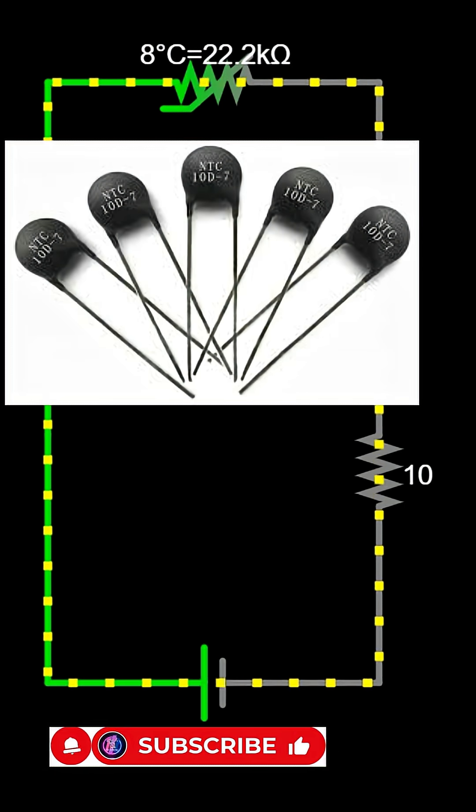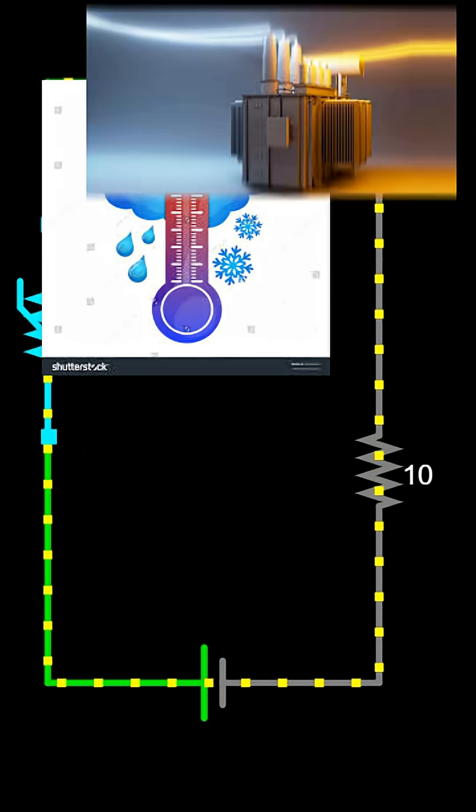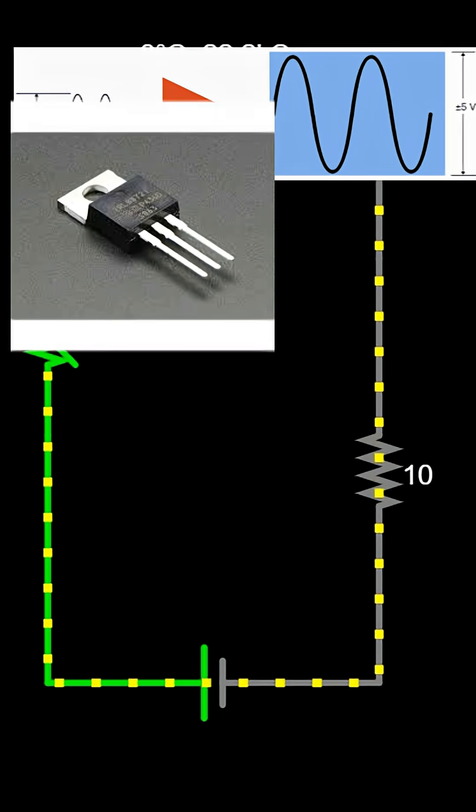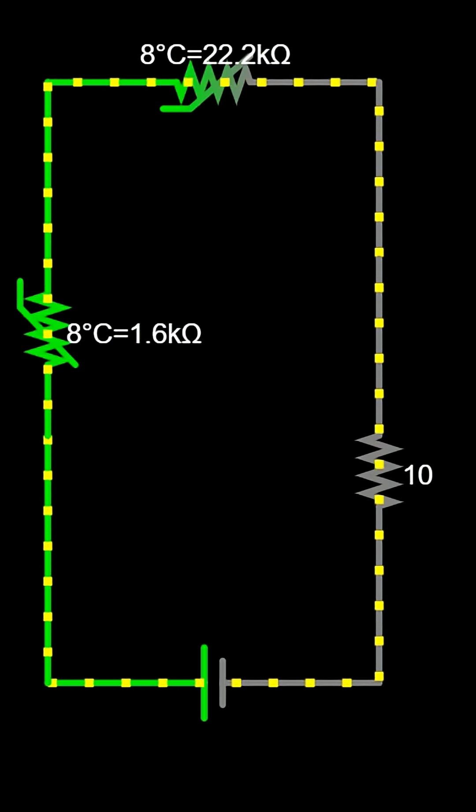In a simple circuit, a thermistor can be connected with a resistor to form a voltage divider. When the temperature changes, the voltage across it changes too, and that signal can control transistors, LEDs, or even microcontrollers.